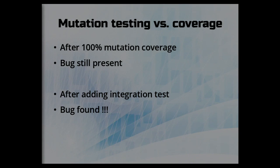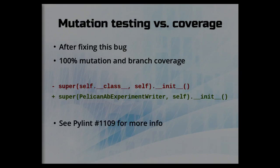I integrated mutation testing into the project and wrote more tests to achieve 100% mutation coverage. But the bug was still present — I didn't have any test which fails when the setting is set to true. I added an integration test which simulates the external environment with the settings and the make command, then verifies what content has been rendered. The test immediately failed. I fixed the bug by changing the setting to false, and also raising an exception in my software if it's set to true. Now we have 100% mutation coverage, 100% branch coverage, and at least one integration test.